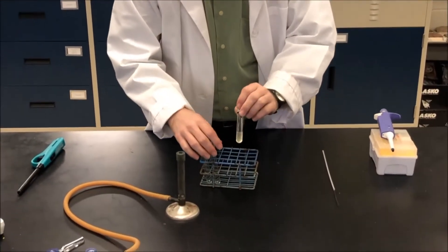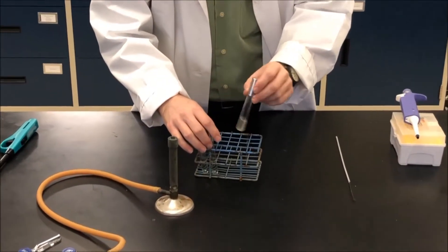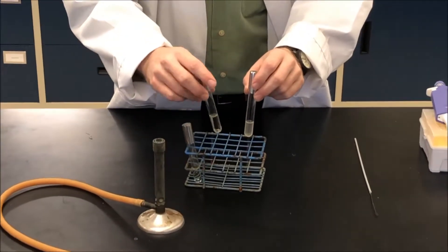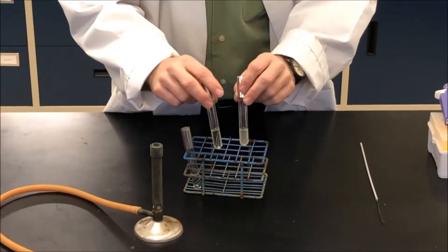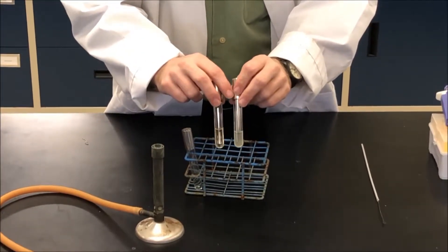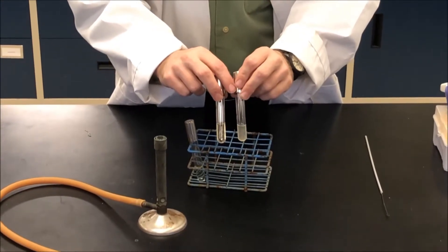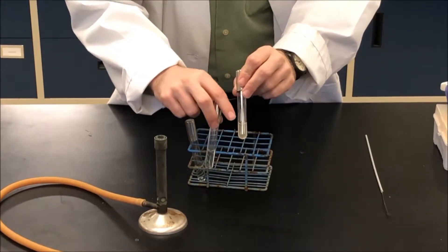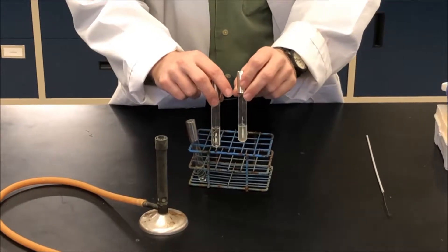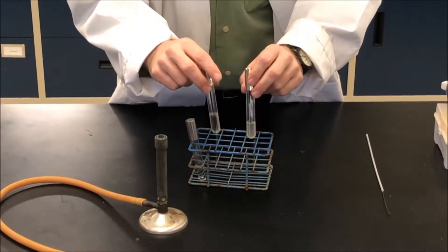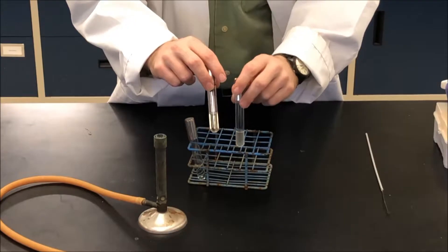To begin, I have a broth culture of some E. coli, and here I have some sterile Luria broth media. You can tell that the E. coli has grown given the fact that the liquid culture here is turbid as compared to the sterile media here, which looks clear.